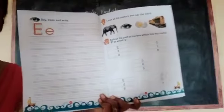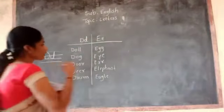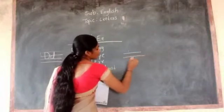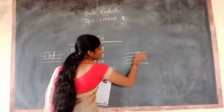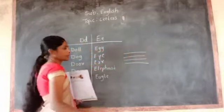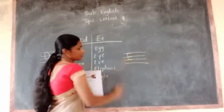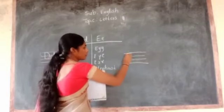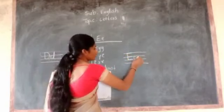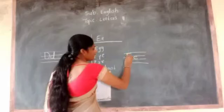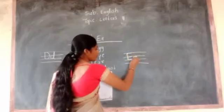How to write E. Look at. We have four-line book. This is four-line book. How to write E. Capital E. Small E. Look at here. Capital E. Small E.